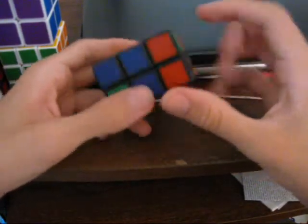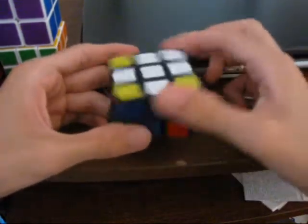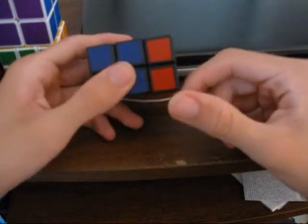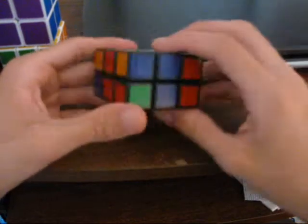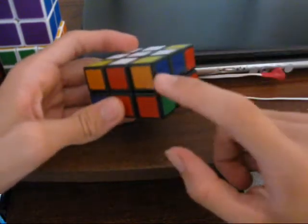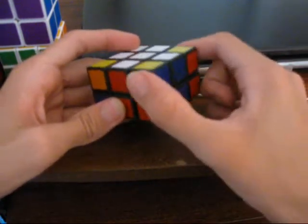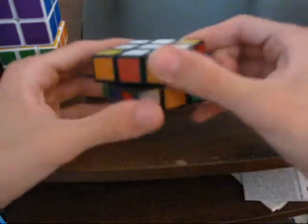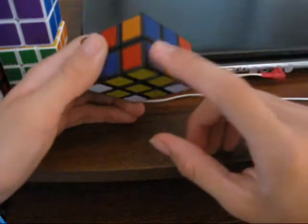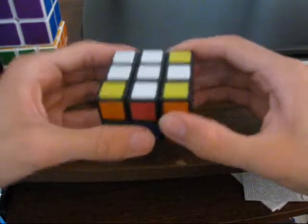So, what you do is you look for corners on the top layer that belong in the bottom layer. And then you do the algorithm. So, here's the orange and blue corner for the yellow side. Put it above the spot it has to go into, and do this algorithm.